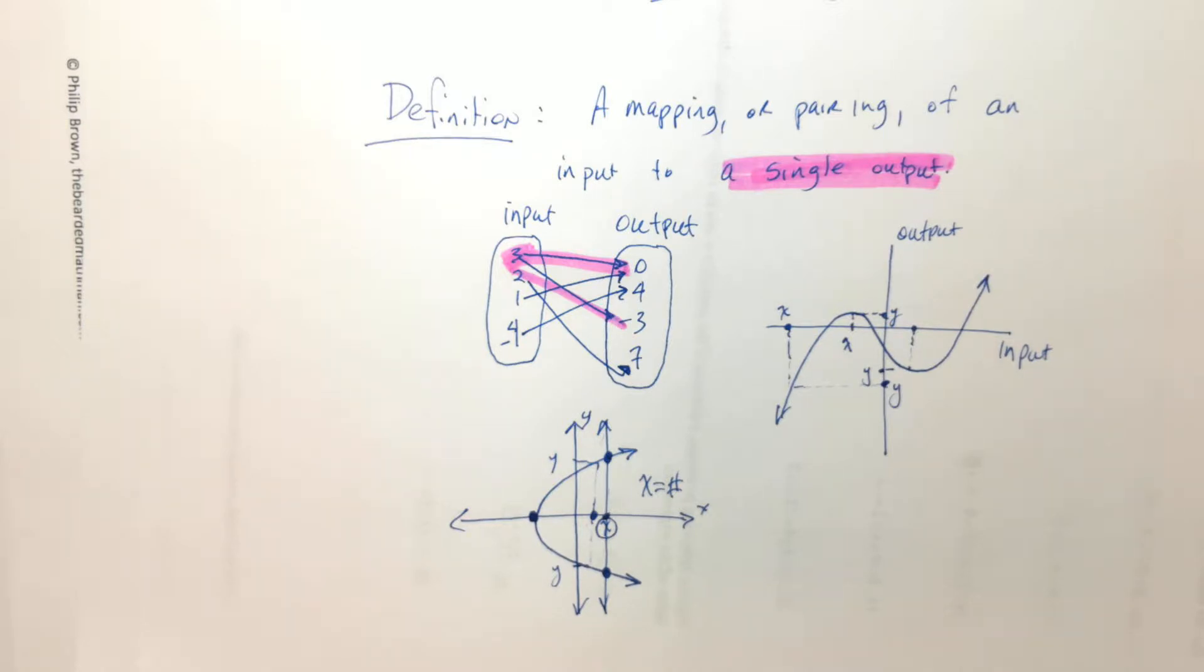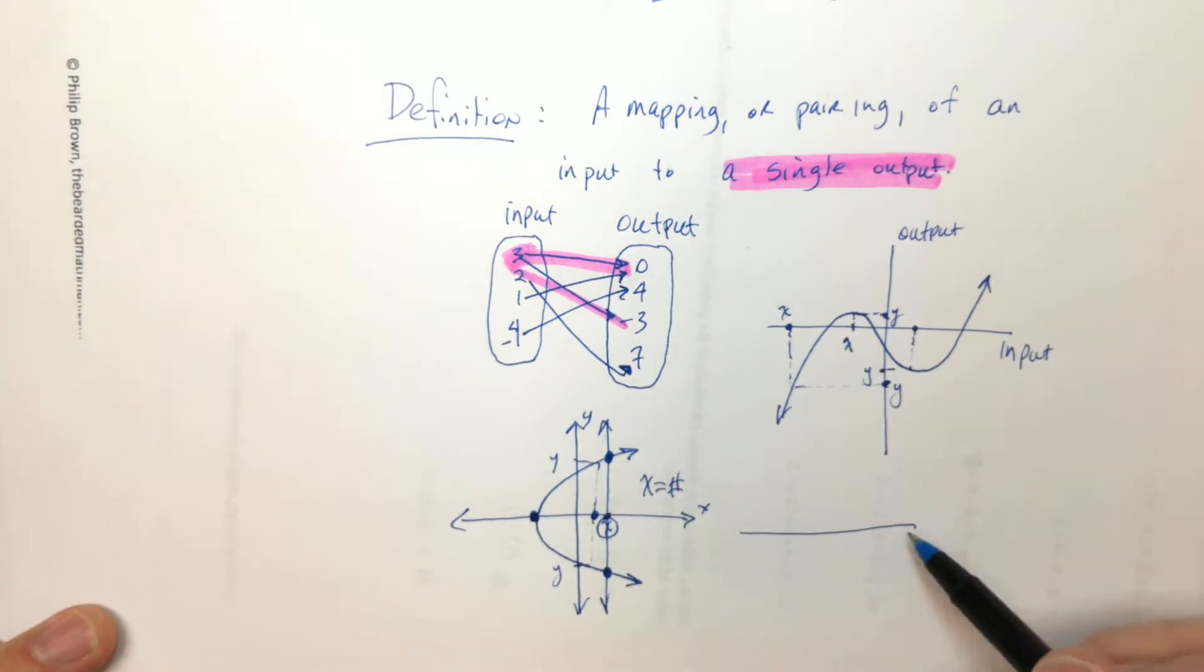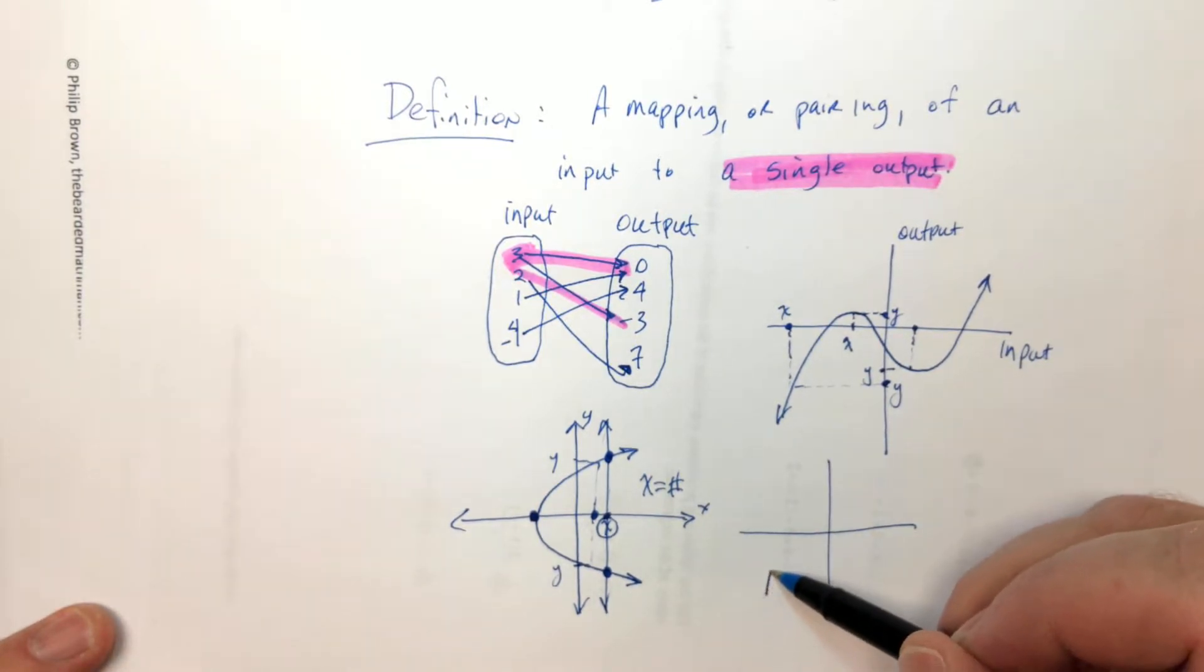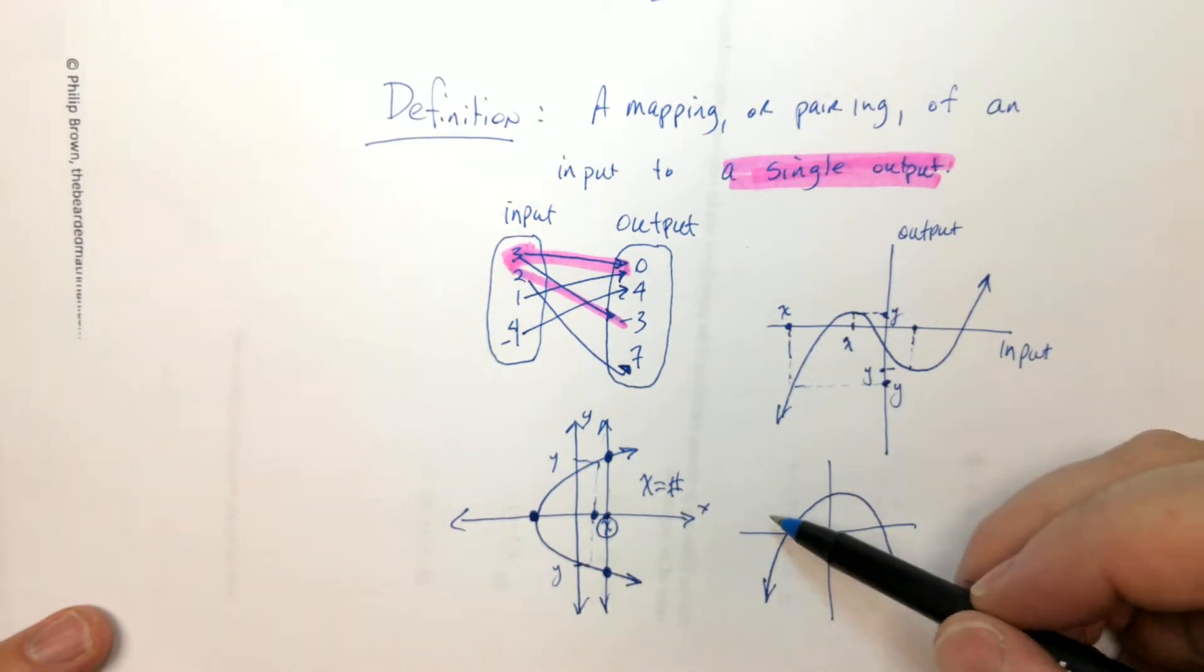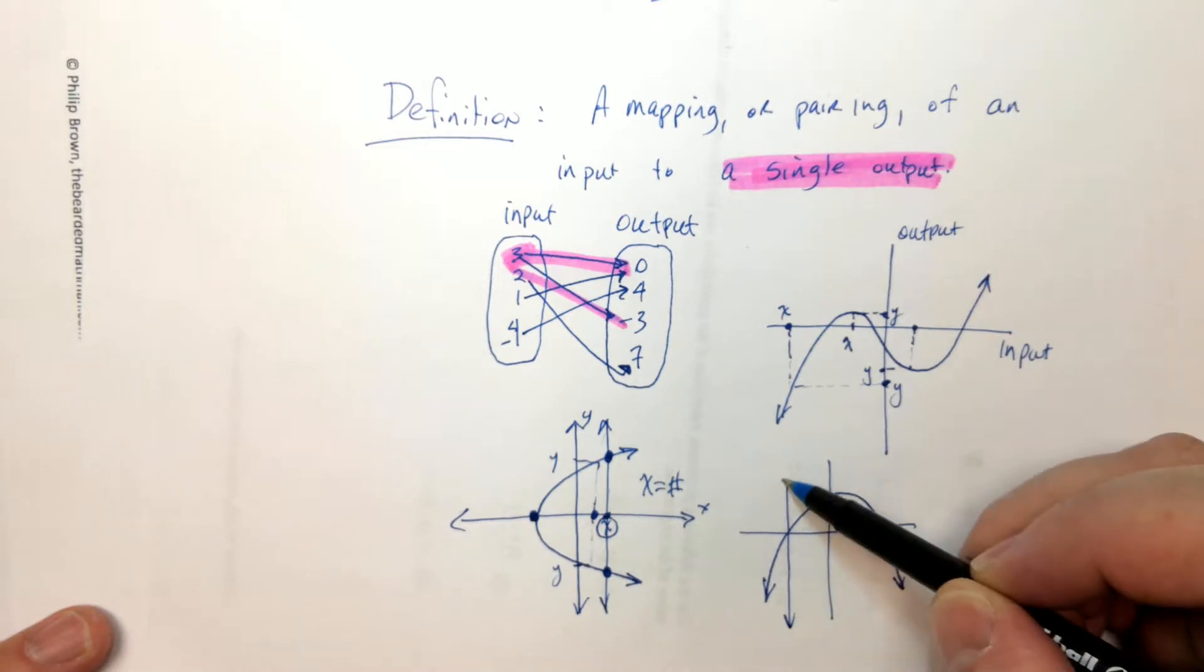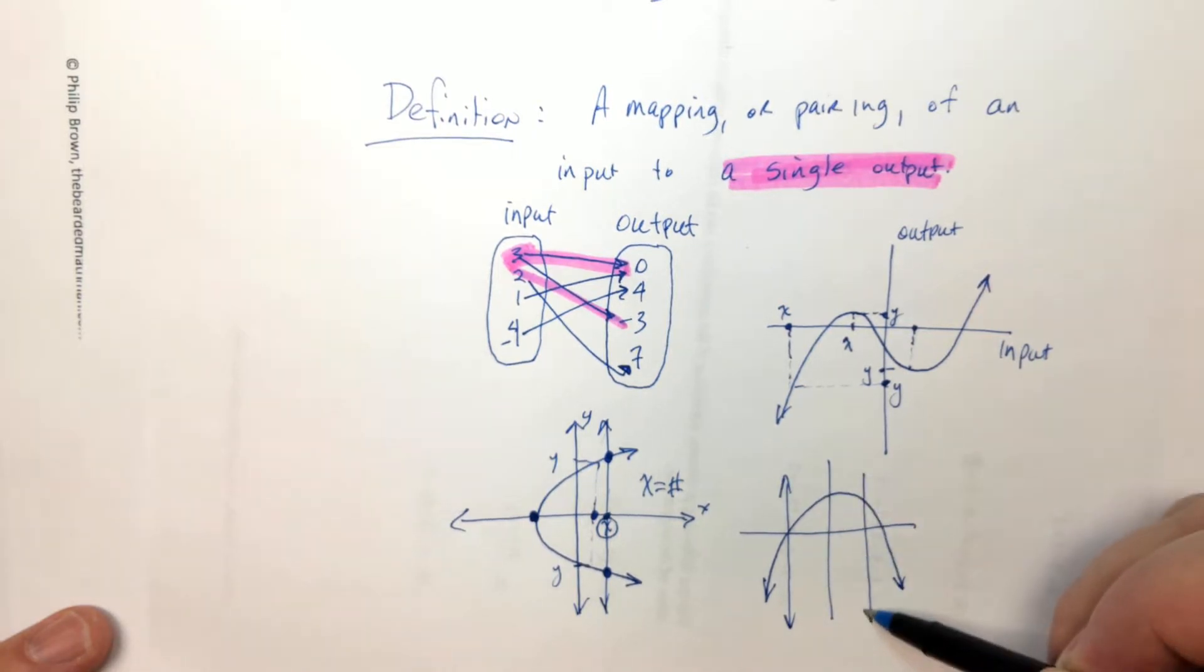So if this one was turned the other way? So if it was looking like this, right? Yeah. That would be okay. That would be a function. Because I couldn't draw a vertical line anywhere and I would touch the curve more than one time. Like, everywhere that I draw a vertical line, it only crosses this curve one time. So this is a function, yes. This one, no.